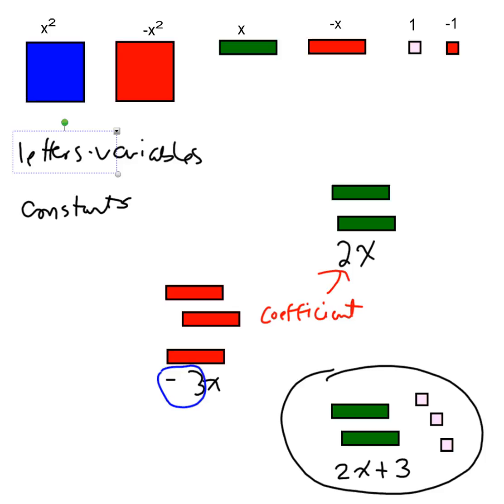If I made the expression equal to something, if I said 2x plus 3 equals 10, then it's called an equation. If I just say 2x plus 3, it's called an expression. And the interesting thing here is, that actually would be your answer.